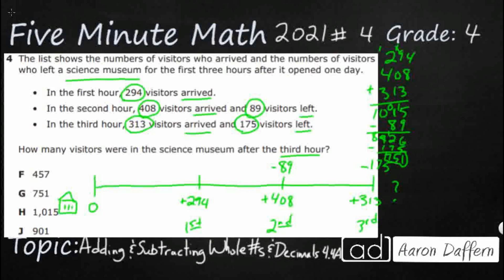Another way to do it would be to kind of do it in chunks. Like let's do my, let's see what my net is. So 408 people arrive and 89 people left. What's my net change right here? So I'm going to have to go 3. That's 10, 9. So I've got 319. So really it's a 319 change at the second hour.